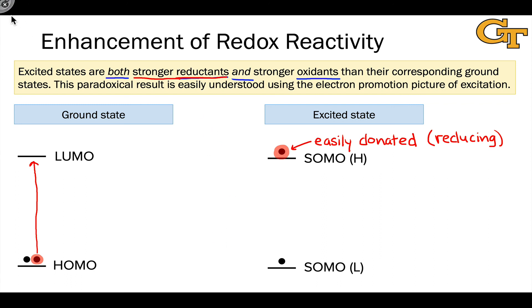And what about the oxidizing power? How do we explain this? Well, remember the other thing that electron promotion does: it leaves behind a vacancy in the SOMO-L, and an electron can easily be added to this vacancy—much more easily than to the vacancy in the ground state LUMO.